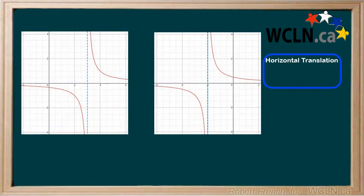Here, we have two rational functions with vertical asymptotes not at x equals 0. We had to move the vertical asymptote to the left by adding and subtract to move it to the right.